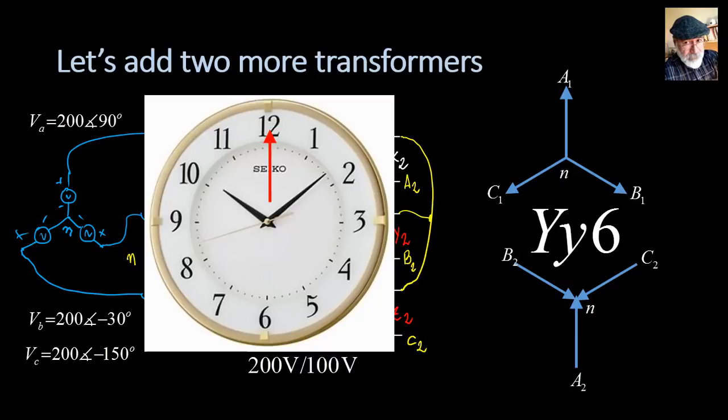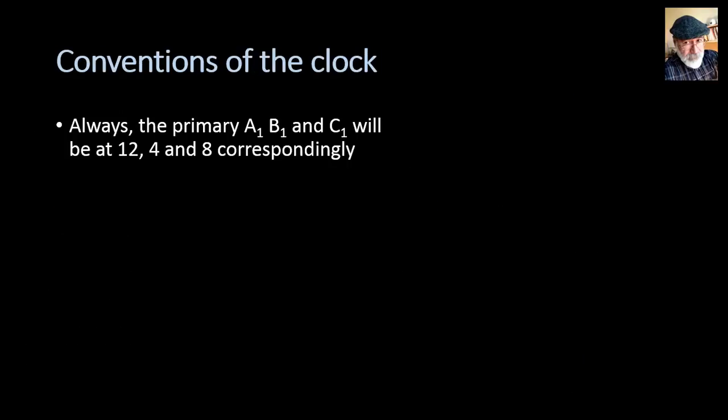This is called a YY6. Industry uses a clock standard: by convention, phase A of the primary is always at 12 o'clock. Where is the voltage of A2 with respect to neutral? It is at 6 o'clock. The voltage of X2 is at plus 90 degrees, but the voltage of A2 with respect to neutral is the negative of X2, so it's at negative 90 degrees. The phase shift is six hours: 6 × 30 degrees = 180 degrees, written as YY6.